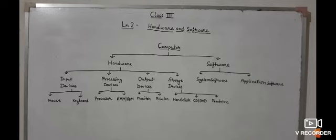Hardware can be classified in four parts: input device, processing device, output device, and storage device.